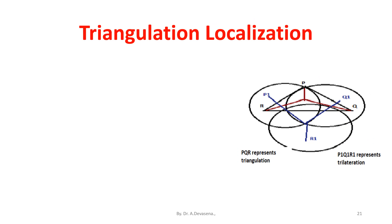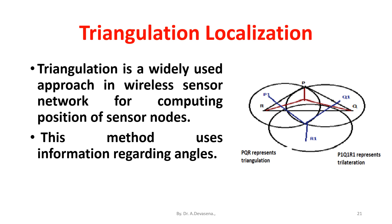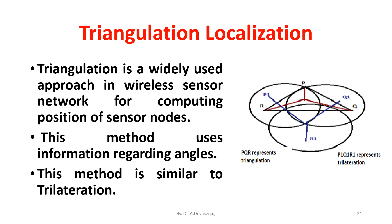Triangulation is a widely used approach in wireless sensor networks for computing the position of sensor nodes. This method uses information regarding angles and is similar to trilateration.